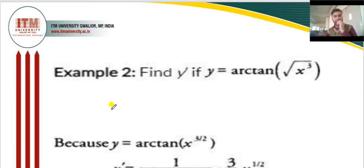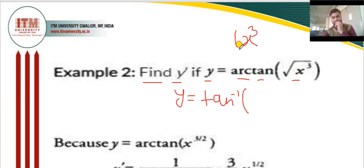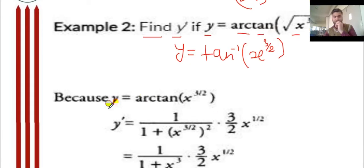Next question: find y' if y is equal to arctan(√(x³)). Firstly, arc means tan inverse. Under root means its power is 1/2, so x³ to the power 1/2 gives x^(3/2). In this way we simplify the question. After that we differentiate: the differentiation of tan⁻¹x is 1 upon (1 + x²). So y becomes y' equal to 1 upon (1 + x²), where x is x^(3/2).